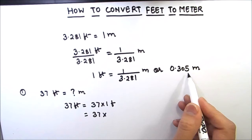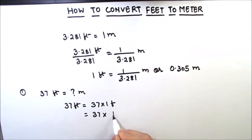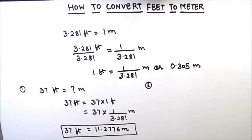Which gives us 11.2776 meters. So 37 feet is 11.2776 meters. Let us solve one more example in which feet is in decimals. Let us take 5.8 feet and convert it to meters.